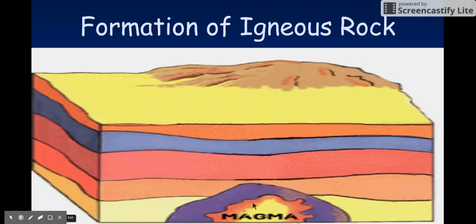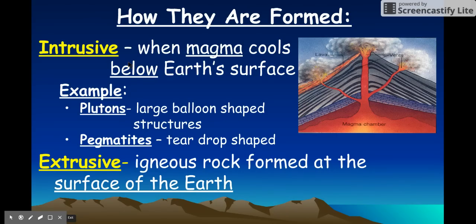If magma underground comes up to the surface, it forms a volcano, and if it cools on the surface it becomes an extrusive igneous rock. But it can also cool underground — that's called an intrusive igneous rock. Intrusive igneous rocks form inside the Earth. Plutons are balloon-shaped intrusive rocks, and pegmatites are teardrop-shaped intrusive rocks underground. Extrusive rocks have exited the Earth and are formed from lava.